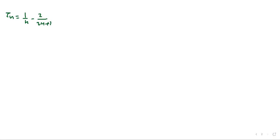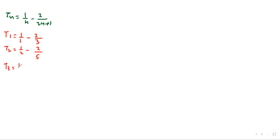So the term tn = 1/n - 2/(2n+1). Now we write the individual terms: t1 = 1/1 - 2/3; t2 = 1/2 - 2/5; t3 = 1/3 - 2/7; t4 = 1/4 - 2/9.